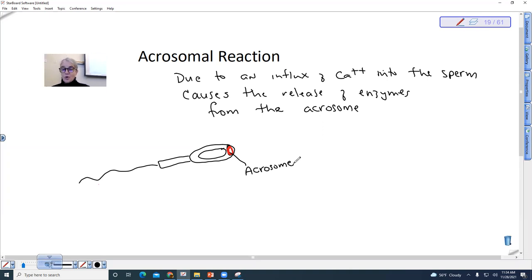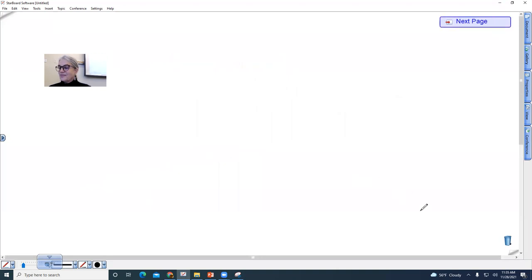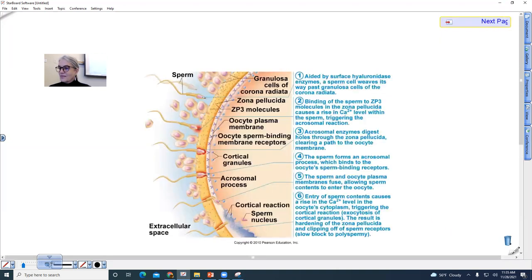And so that acrosomal reaction can be shown here when we look at another diagram. So this is showing the zona pellucida right here. So this is yellow instead of clear, like it was shown on the last diagram. So the acrosome, that membrane is kind of broken down and the sperm can digest its way in through the zona pellucida. It is going to have a receptor on its surface and it's binding to these receptors on the surface of the oocyte.